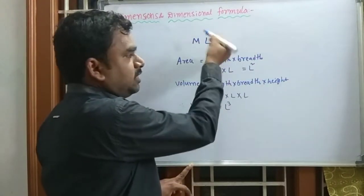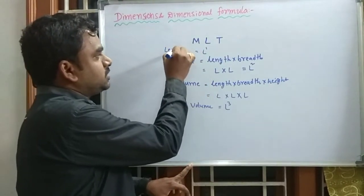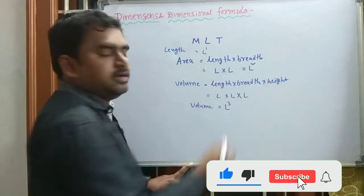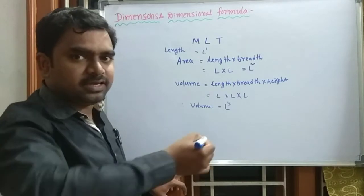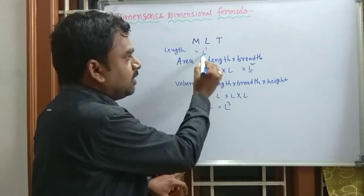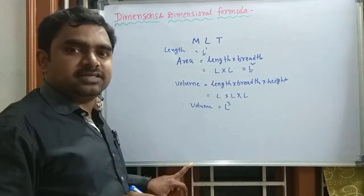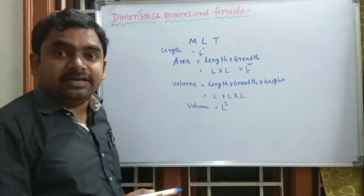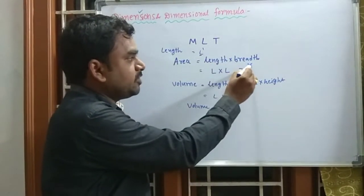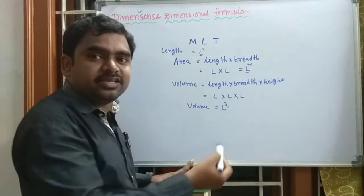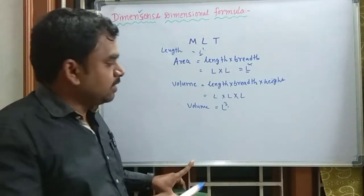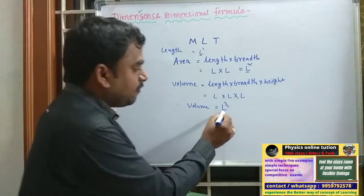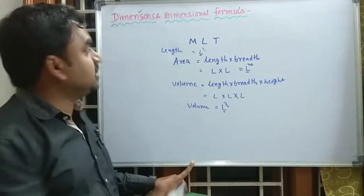So L power 1 is the fundamental physical quantity, and L power 2 is the derived physical quantity for area. L power 3 would be for volume. Dimensions are the powers to which the base quantities — the fundamental quantities — are raised.